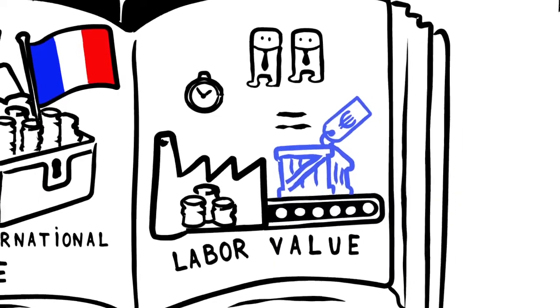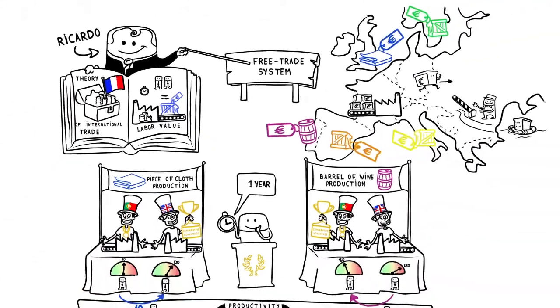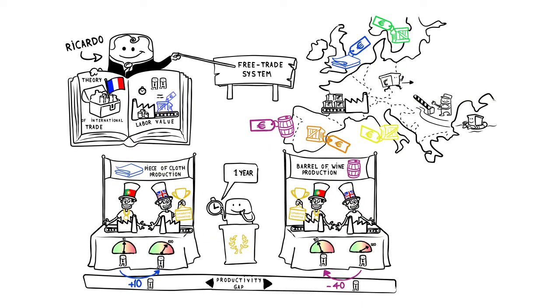For Ricardo, therefore, it's by specializing in producing what it can do the best, and by participating in international trade, that a country will be able to increase its wealth.